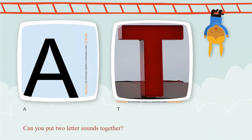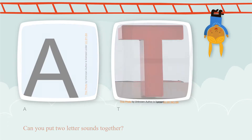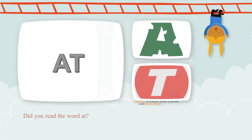Can you put two letters together to make a sound? Like A says 'ah' and T says 't' — let's try it. Ready? Ah, t — ah, t. Did you read the word 'at'? Did you see how A and T put together makes the word 'at'?